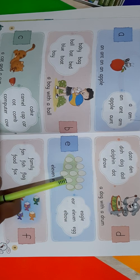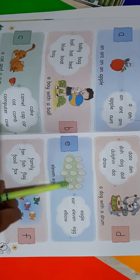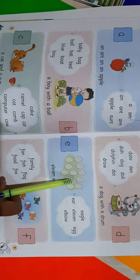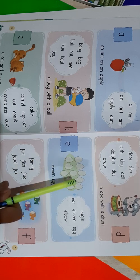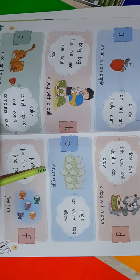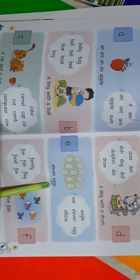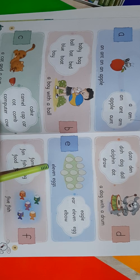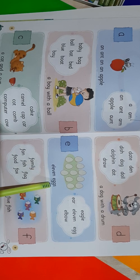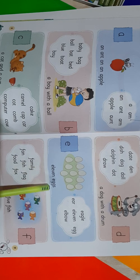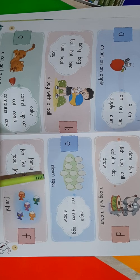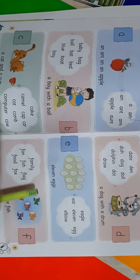Now here we can see a picture with eggs. Let's read out the sentence below: Eleven eggs. Easy, short and sweet sentence, isn't it? Eleven eggs. Repeat after me: Eleven eggs. Read it: Eleven eggs. Nice, no?